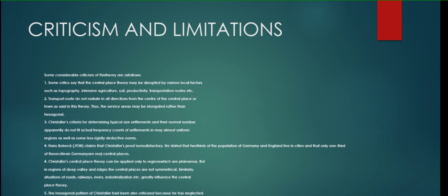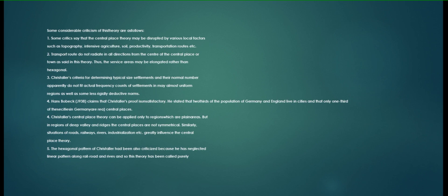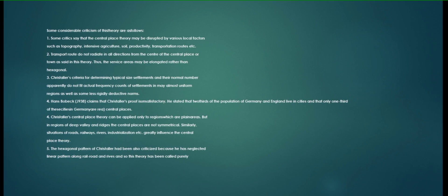After this comes the second one. It means transport route does not radiate in all directions from the center place or town as said in this theory. Thus the surface areas may be elongated rather than hexagonal shape. Then comes the other criticism like the hexagonal pattern of Christaller had been also criticized because he has neglected linear pattern along the railroad and rivers, and so this theory has been called purely impure.